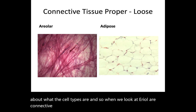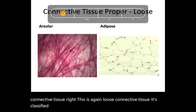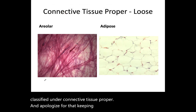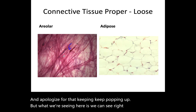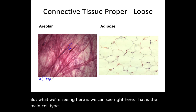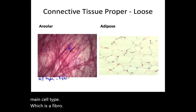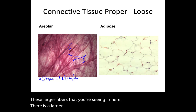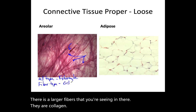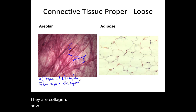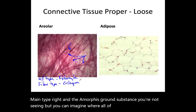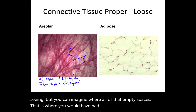Looking at areolar connective tissue — this is loose connective tissue classified under connective tissue proper. The main cell type visible here is a fibrocyte. Those larger fibers you're seeing are collagen — that's the main fiber type. The amorphous ground substance you're not seeing, but you can imagine it filling in all that empty space.